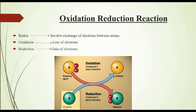Next topic is oxidation-reduction reactions. Various life processes in organisms involve constant flow of energy. For all life processes, oxidation-reduction reactions are the direct source of energy. Redox reactions involve exchange of electrons between atoms. The loss of electrons is called oxidation, and the gain of electrons is called reduction. Look at figure 7.2. When compound A loses electrons, it is oxidized, and compound B gets these electrons and it is reduced.